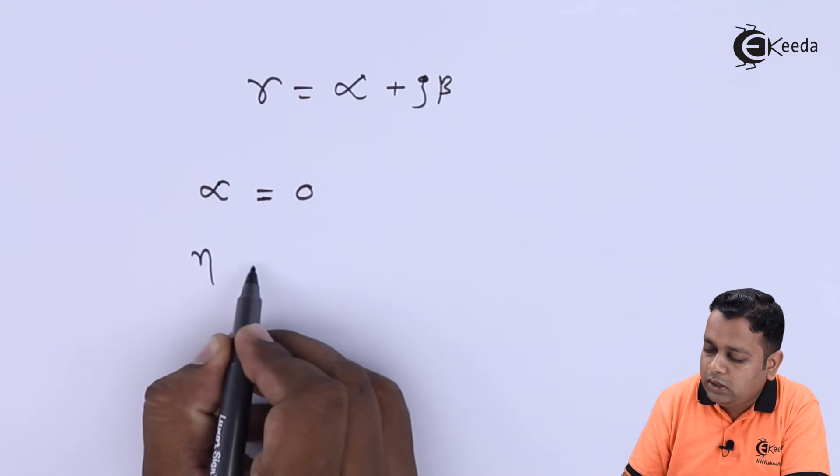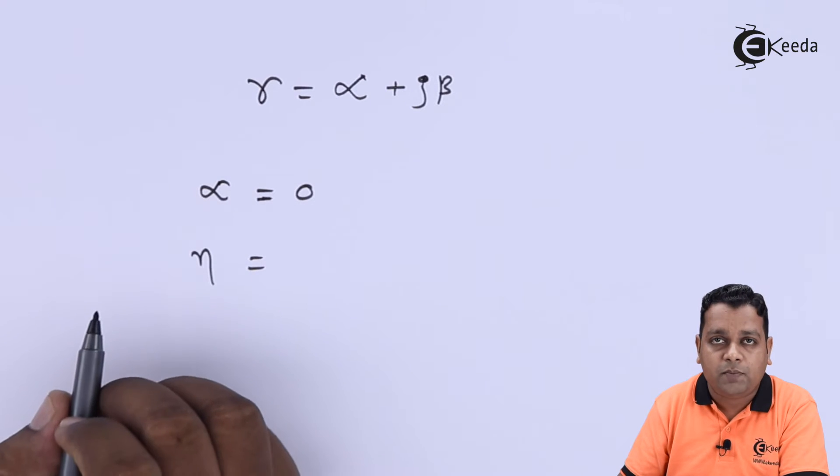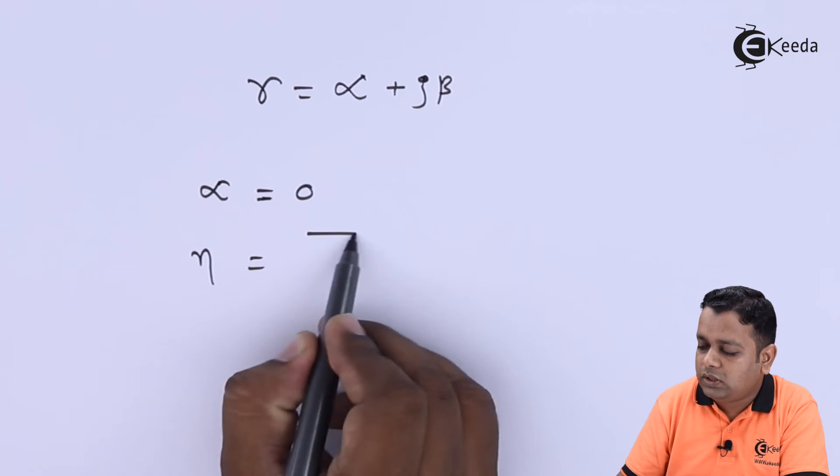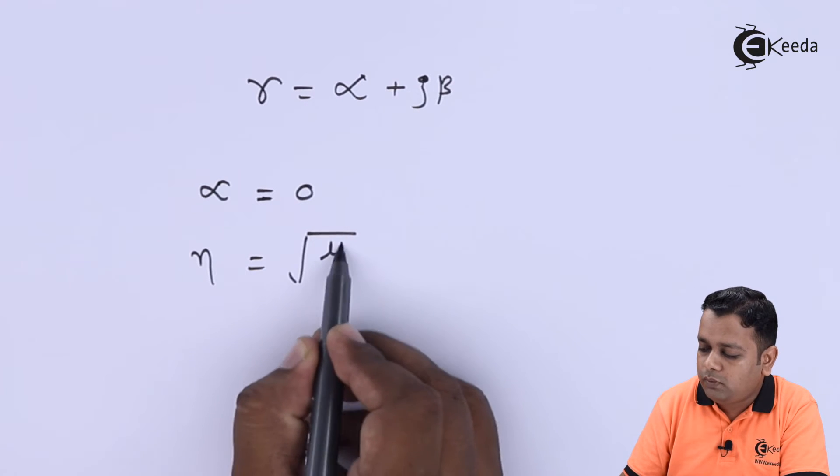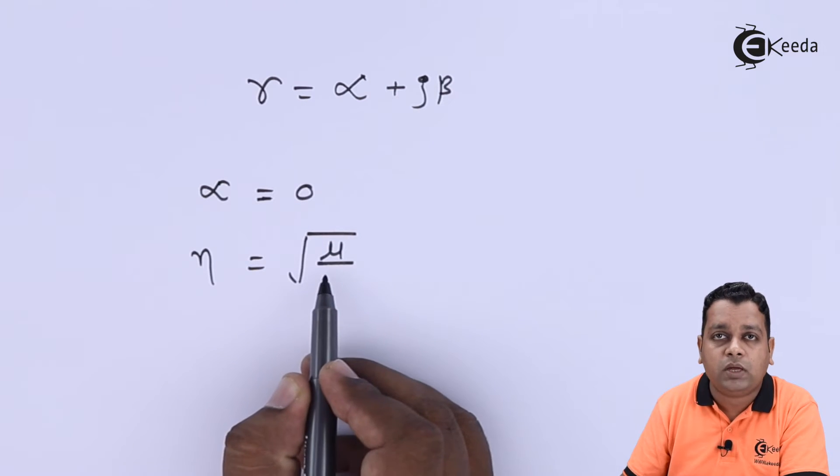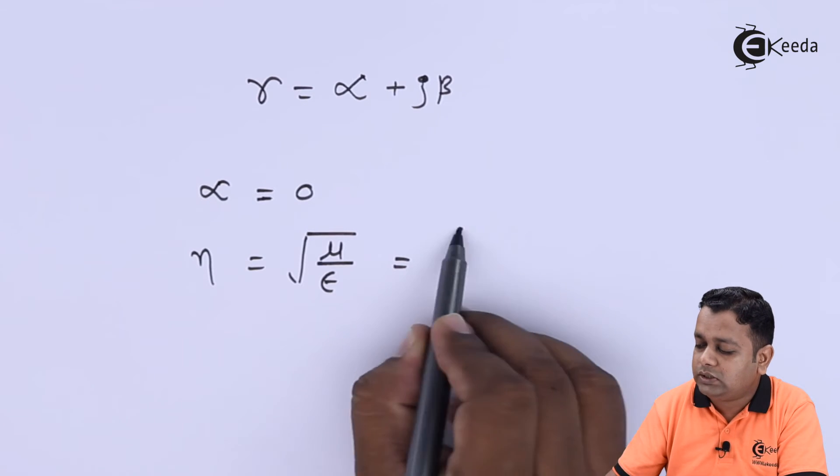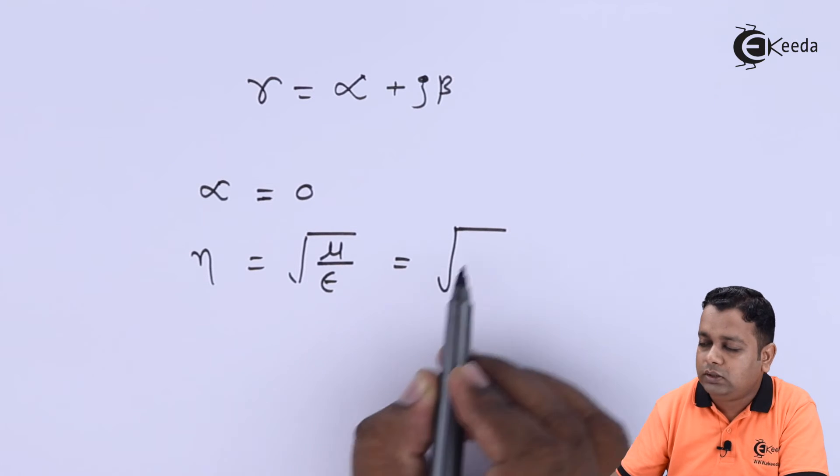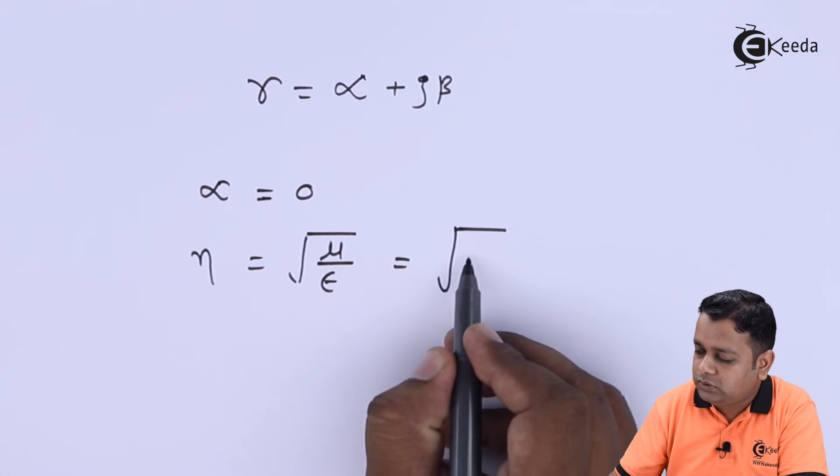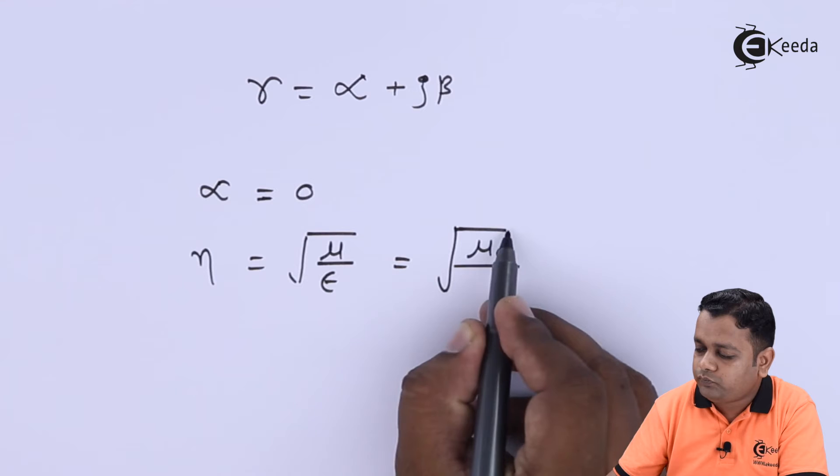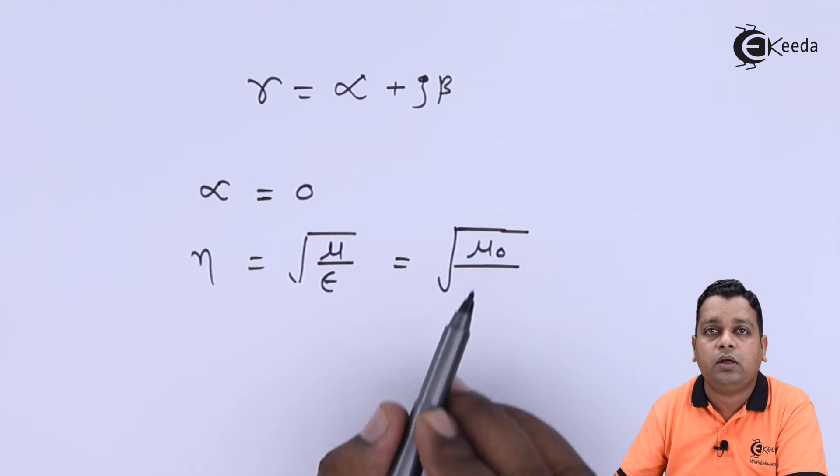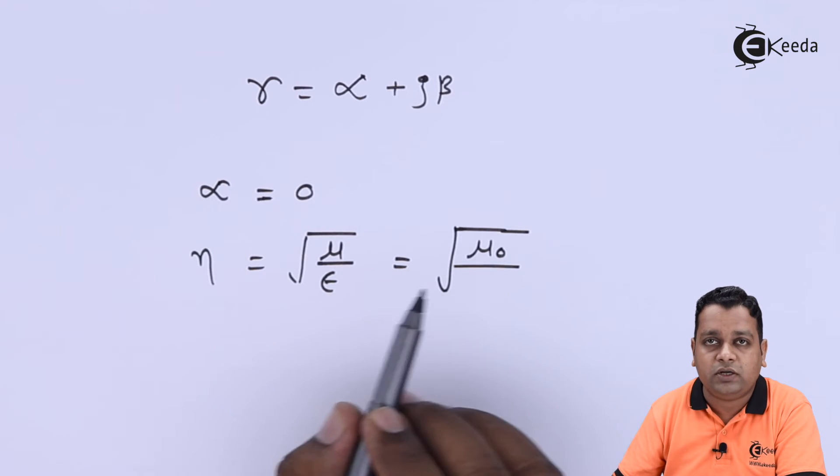Further, if you take intrinsic impedance η, it is the square root of the ratio of permeability of the medium to the permittivity of the medium. Here we have to substitute at the numerator position μ₀ for the free space or lossless dielectric, so it does not have any magnetic characteristic into consideration. Hence μ₀ = 4π × 10⁻⁷ henry per meter will be the value here.